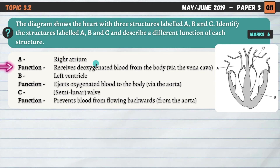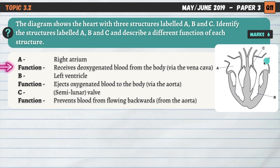Now we need to describe a different function of each one. The function of the right atrium: it receives deoxygenated blood from the body. It's really important to include whether the blood is oxygenated or deoxygenated at any point during the cardiac cycle. That blood returning from the body via the vena cava is deoxygenated because it's given all its oxygen up to the body. So it returns as deoxygenated blood to that right atrium. The function of the left ventricle: this ejects oxygenated blood — oxygenated blood exists on the left side of the heart and deoxygenated on the right — this ejects oxygenated blood to the body via the aorta.